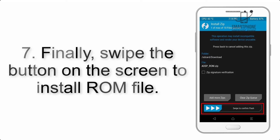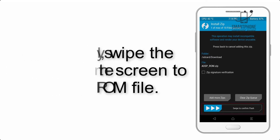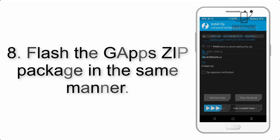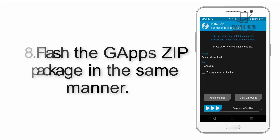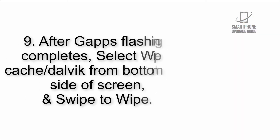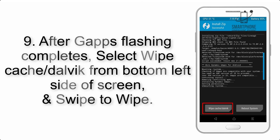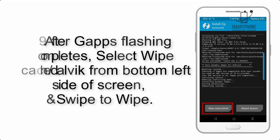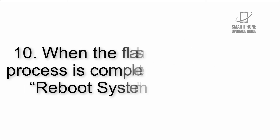Step 7: Swipe the button on the screen to install the ROM file. Step 8: Flash the GApps zip package in the same manner. Step 9: After GApps flashing completes, select Wipe Cache and Dalvik from the bottom left side of the screen and swipe to wipe.